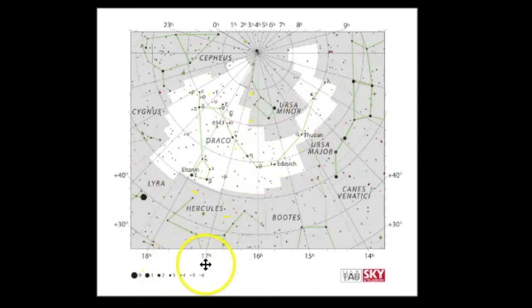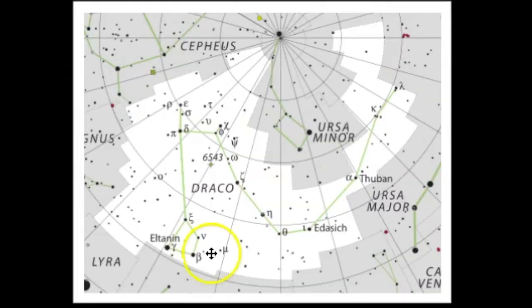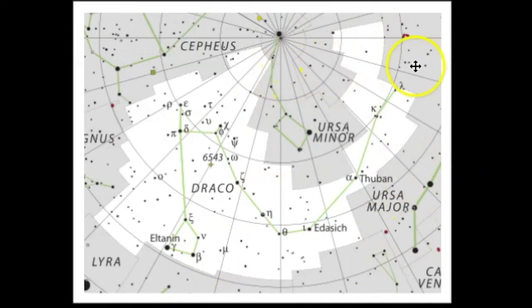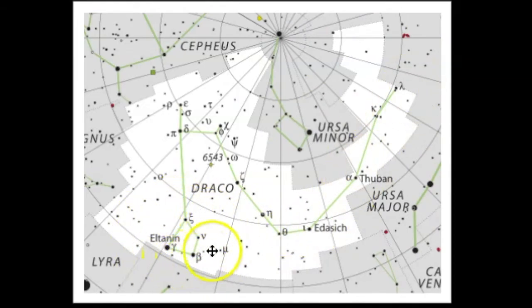So this makes it a challenging constellation to find, but the way to really find Draco is to look for Ursa Major and Ursa Minor. That's how I find it — the tail goes between those two constellations, and then I look for this four-sided shape in the sky.